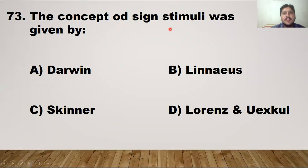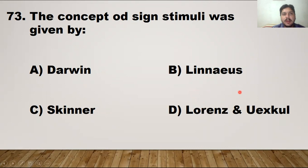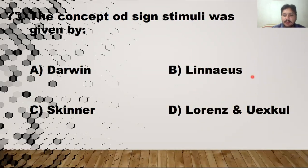The concept of sign stimuli was given by Lorenz and Uexküll. Darwin gave the definition of instinct. Linnaeus introduced the two-kingdom system. BF Skinner explained learned behavior through experiments. Lorenz and Uexküll explained sign stimuli.